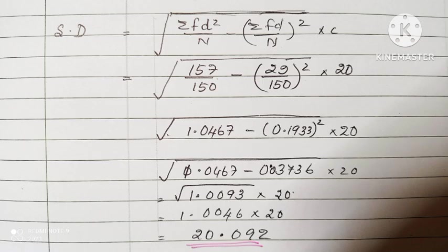Formula for finding standard deviation is equal to square root of sigma d squared by n minus sigma fd by n the whole squared times class interval. On calculation, we will get the answer as 20.092.